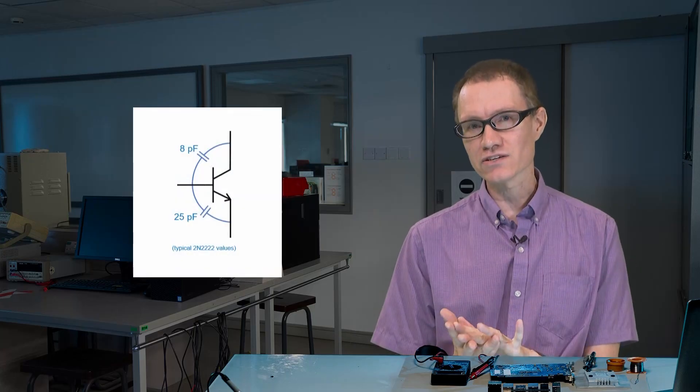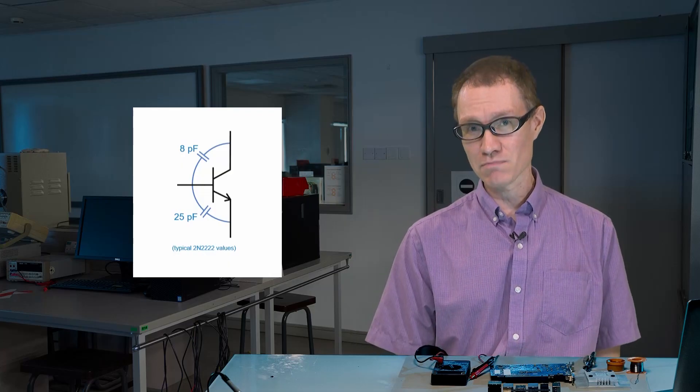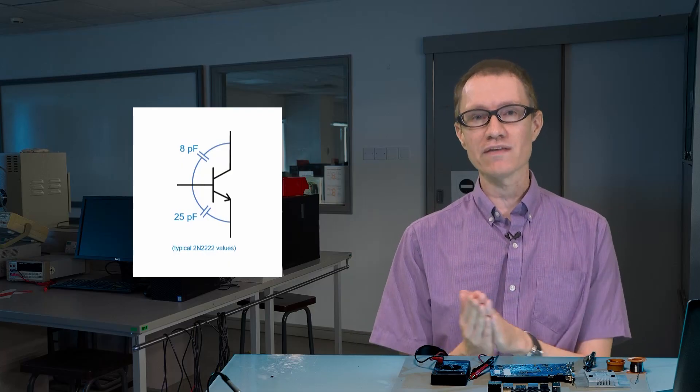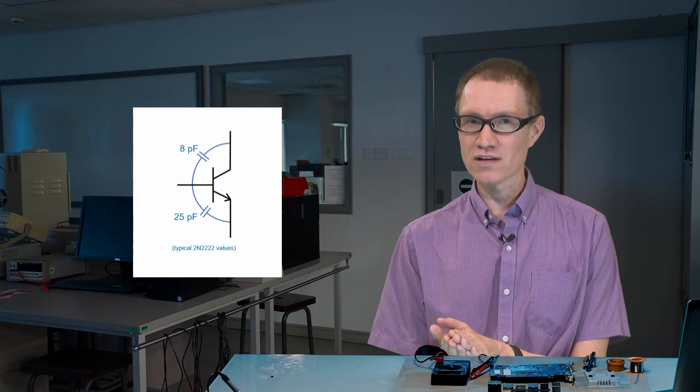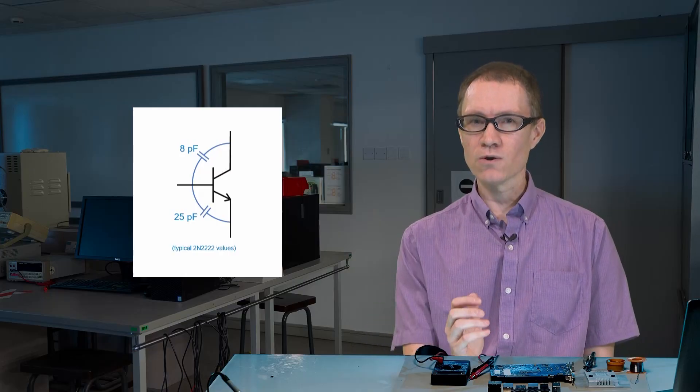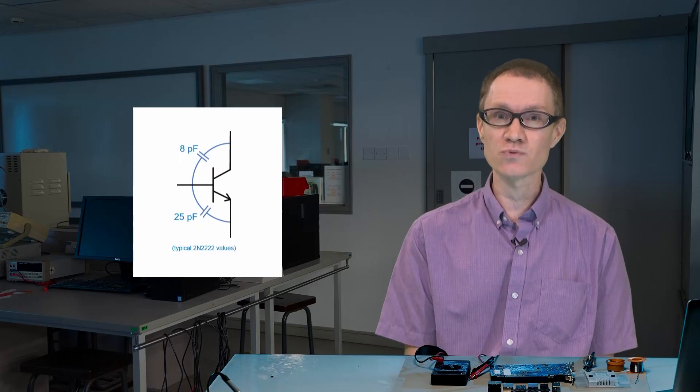Between the base and the collector, the datasheet says we have about 8 picofarads, and between the base and the emitter, it looks like we have about 25 picofarads. So just from these values, you might think the 25 picofarad case is worse.